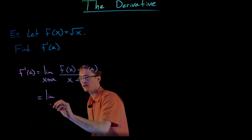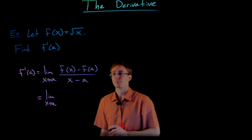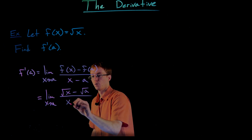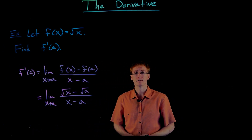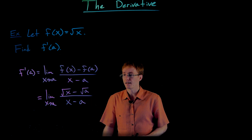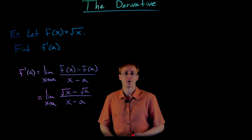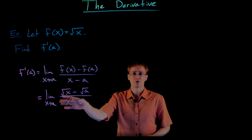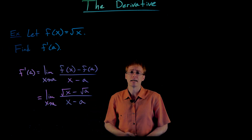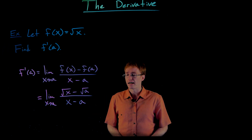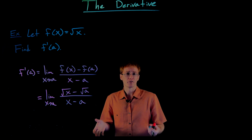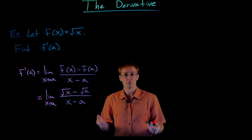To find our derivative using the limit definition, we evaluate f of x and f of a in the general formula. f of x is just the square root of x, and f of a is the square root of a. So our limit looks like the limit as x approaches a of the square root of x minus the square root of a, all over x minus a. We cannot use direct substitution — plugging in x equals a gives zero over zero, that indeterminate form. To resolve it, we need to cancel a factor of x minus a.